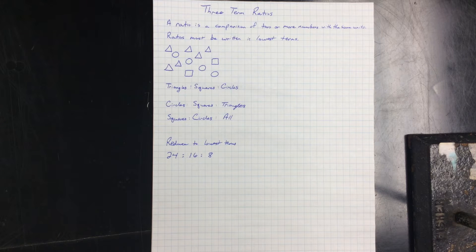Hello and welcome to Mr. Wiley Teaches Math. Today we're going to talk about three-term ratios. From last time, a ratio is a comparison of two or more numbers with the same units, and we must write our ratios in lowest terms.